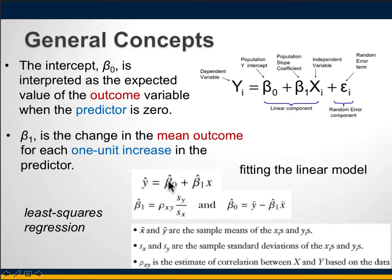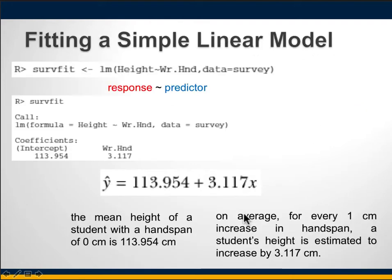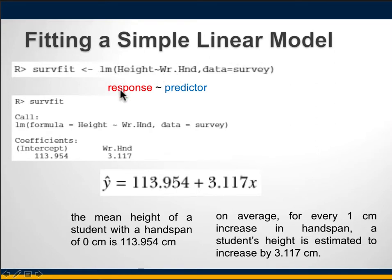For us right now, we don't need to know the math behind computing the betas. Our basic dataset question is: does a person's writing hand span affect their height? A linear regression model is fit using the lm() command. On the left-hand side of the tilde is the response variable; on the right-hand side is the independent predictor. Then you specify which dataset it comes from.